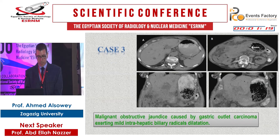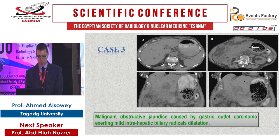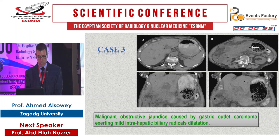This is a case of renal impairment where no intravenous contrast was administered. There is a large gastric mass in the gastric pylorus as well as a solid mass in the anterior abdominal wall. This mass is seen infiltrating the inferior liver surface and causing biliary obstruction, representing malignant obstructive jaundice caused by gastric adenocarcinoma with intrahepatic biliary radical dilatation.